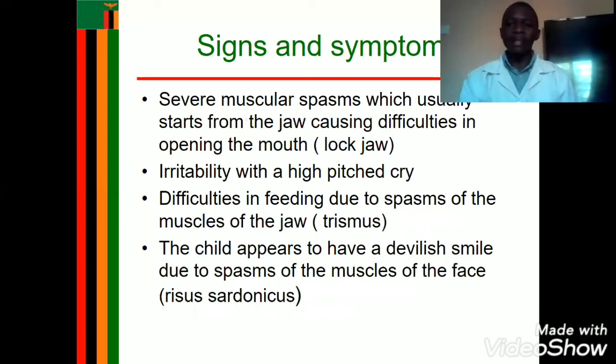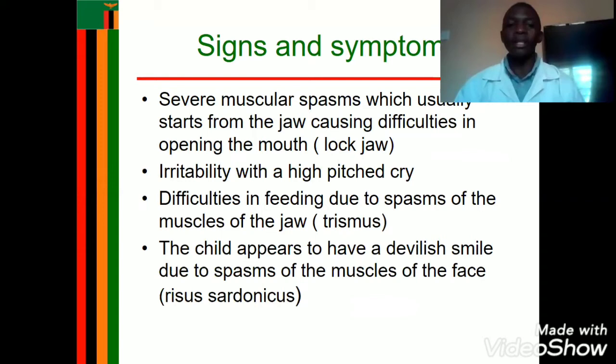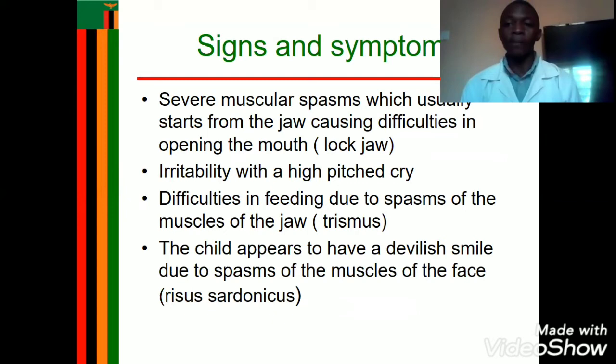When it comes to signs and symptoms of neonatal tetanus: a locked jaw may be seen, where severe spasms usually start from the jaw causing difficulties in opening the mouth — this is known as trismus. Irritability with a high-pitched cry may be present due to increased spasms and raised body temperature. There are also difficulties in feeding due to spasms of the muscles of the jaw.